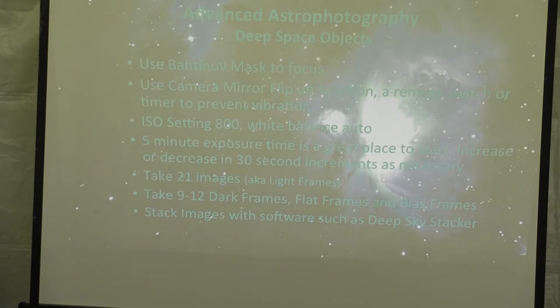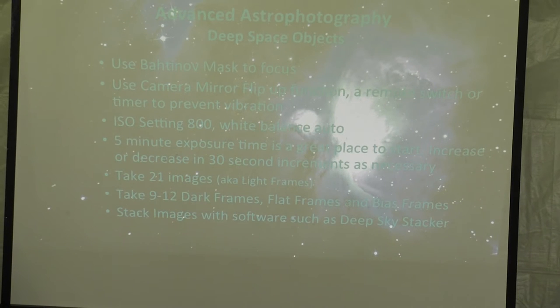Here's where the Bahinov mask comes in handy. You're going to want to focus on a star, swing over to your nebula, and you'll be able to take your picture. You're going to want something with the flip function, ISO setting again 800, with white balance to auto. So, five minute exposure. If you get out there and you're like, how long should I take a picture for? I recommend starting at five minutes. You will capture something in five minutes.